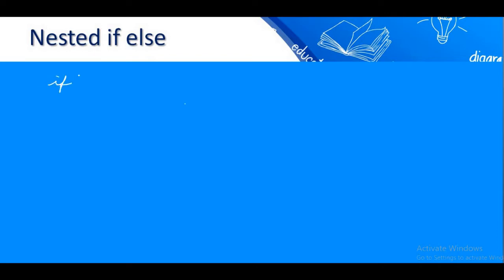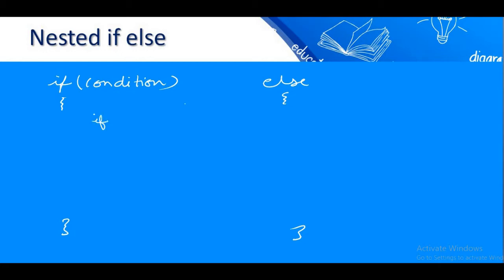What is a nested if-else statement? Suppose you have one if statement with its curly braces and then an else statement for that particular if. You know that you can write any statements inside the if block and also inside the else block. So why not an if-else, since it is also a kind of statement — we can write another if inside it.